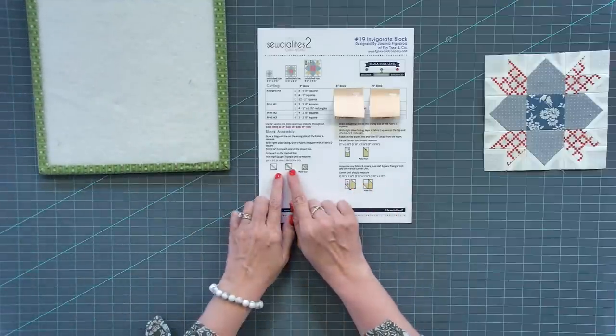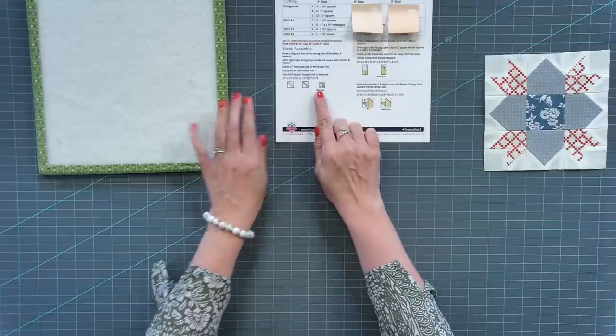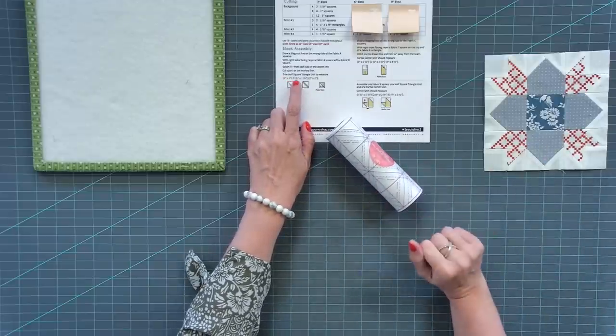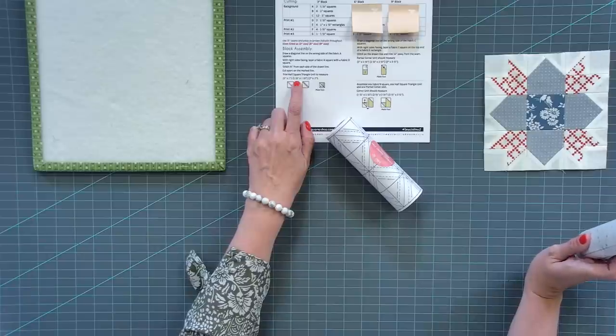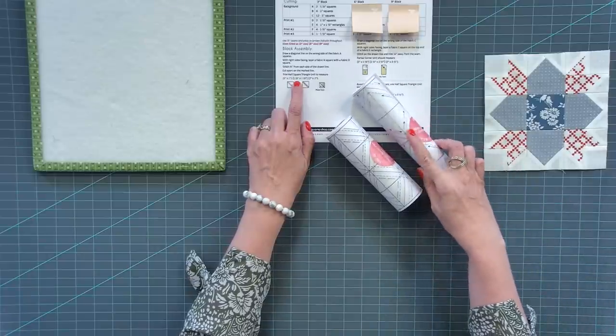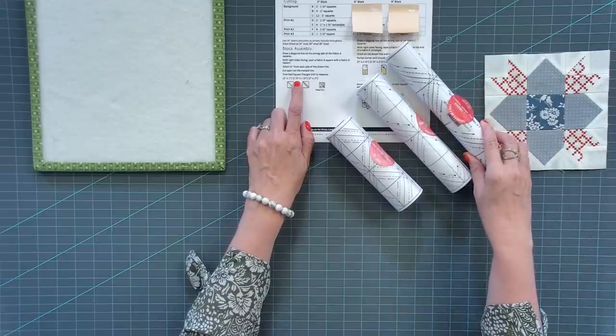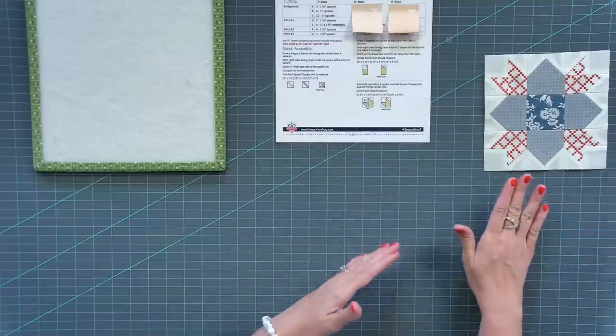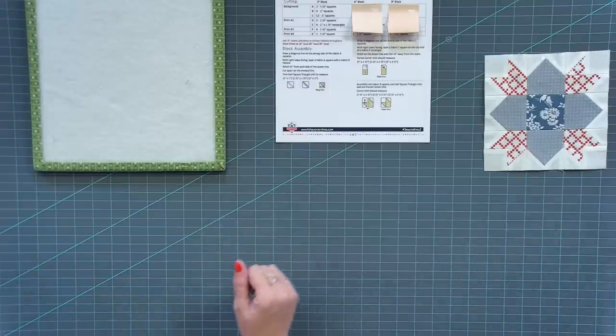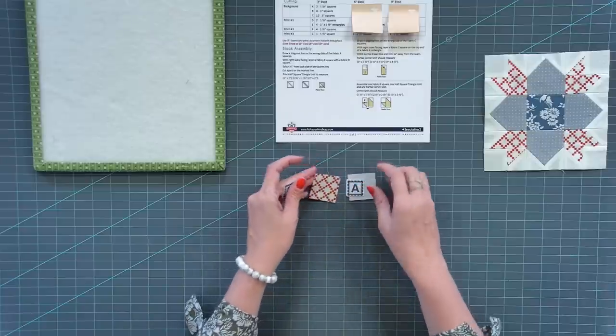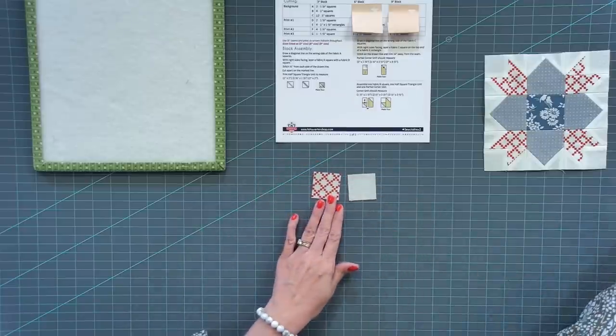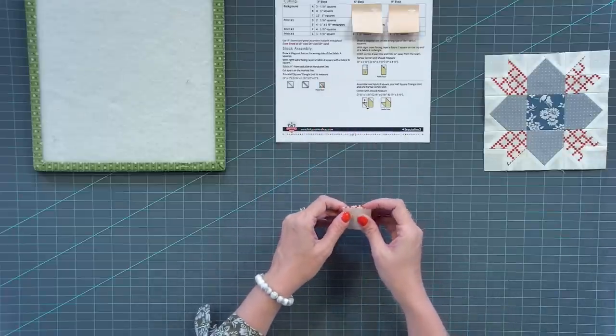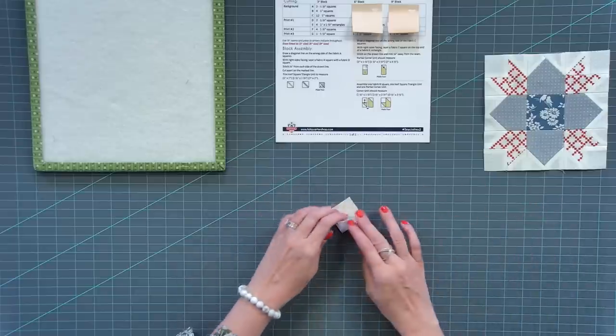The first part is half square triangles. If you are making the three inch size, you can use our half inch triangle paper. The small block uses half inch paper, the medium block uses one inch, and the larger block uses one and a half. I've gotten a lot of questions about how to make half square triangles without triangle paper, so that's what I'm gonna do today. We wrote this pattern where fabrics A and fabric D are slightly bigger and then you trim down.